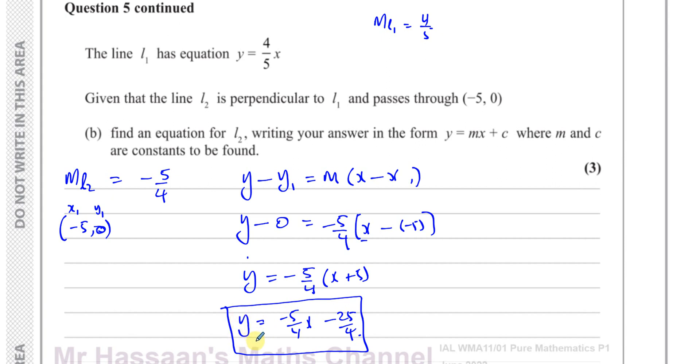So Y has to be the subject. If they didn't state that, you could have written this as 4Y equals minus 5X minus 25, or something like that, without any fractions. But they want it in this form.